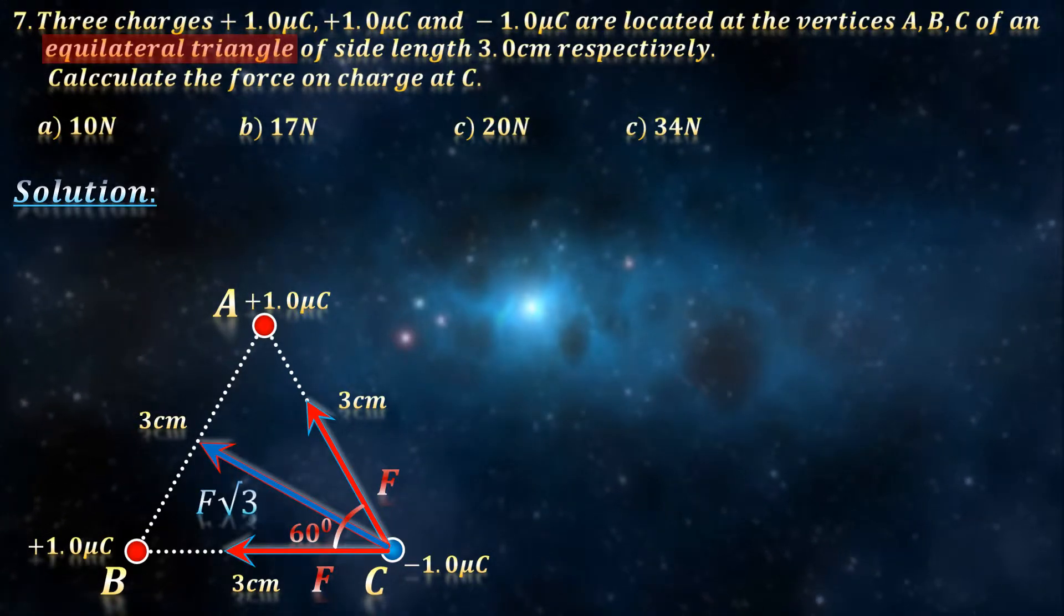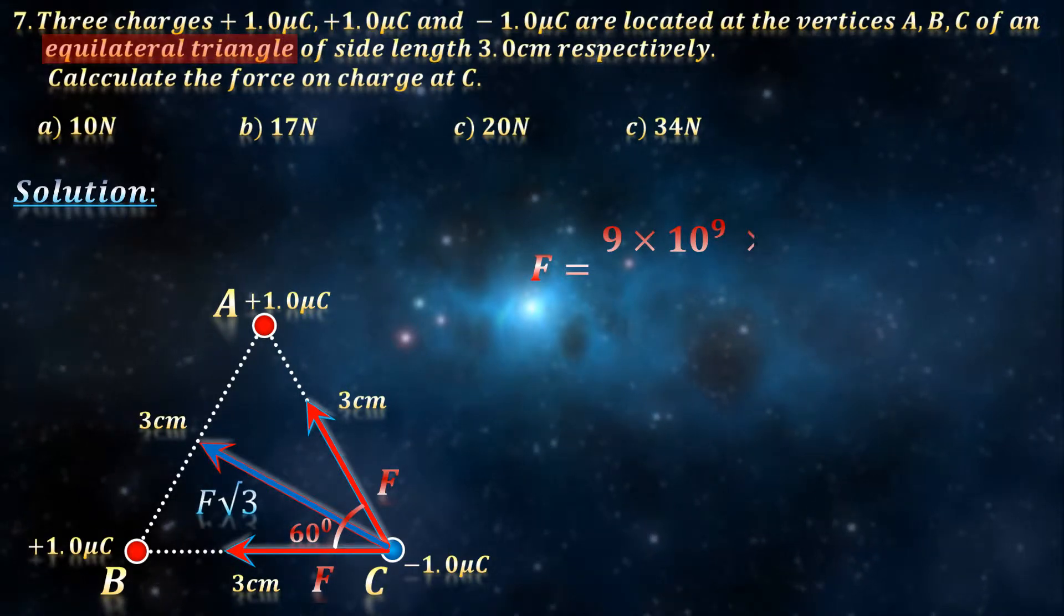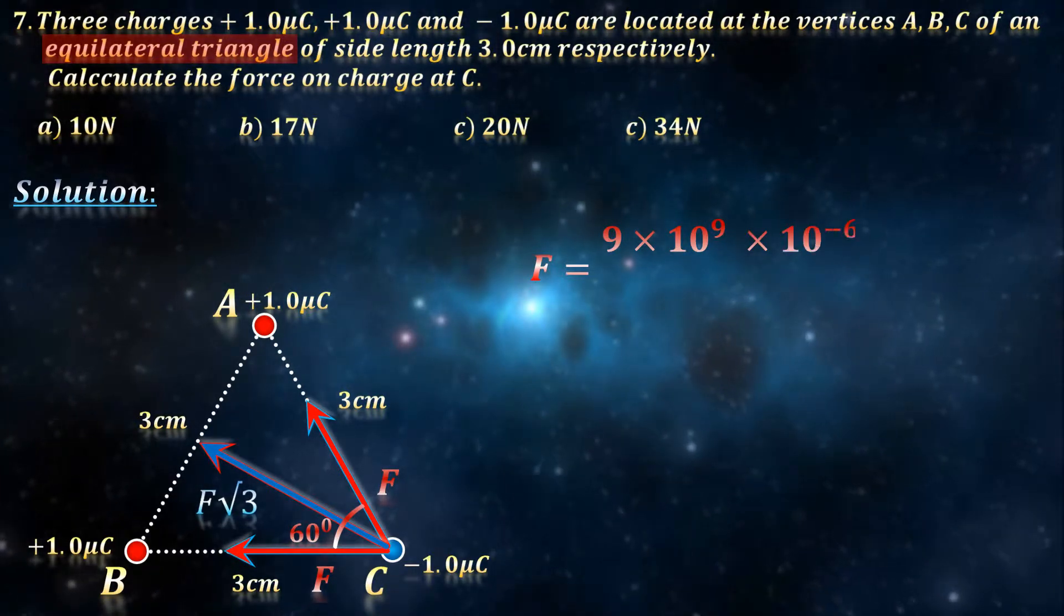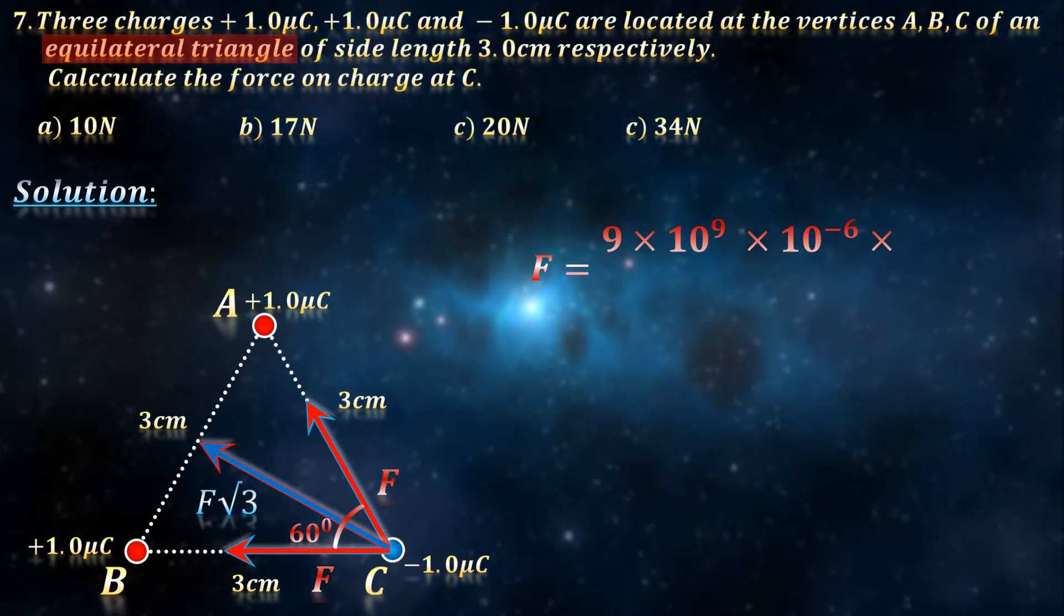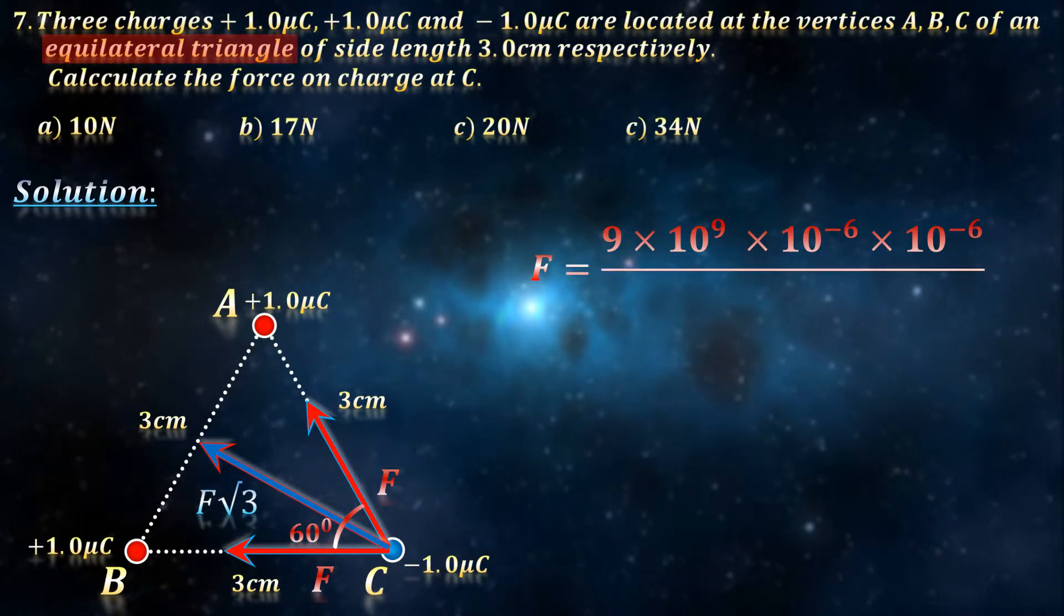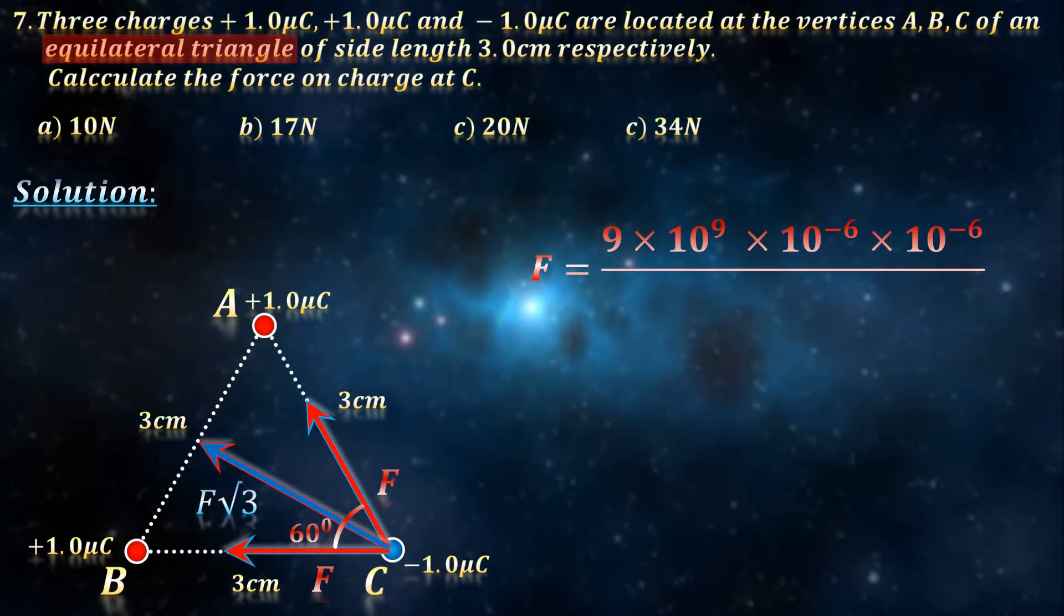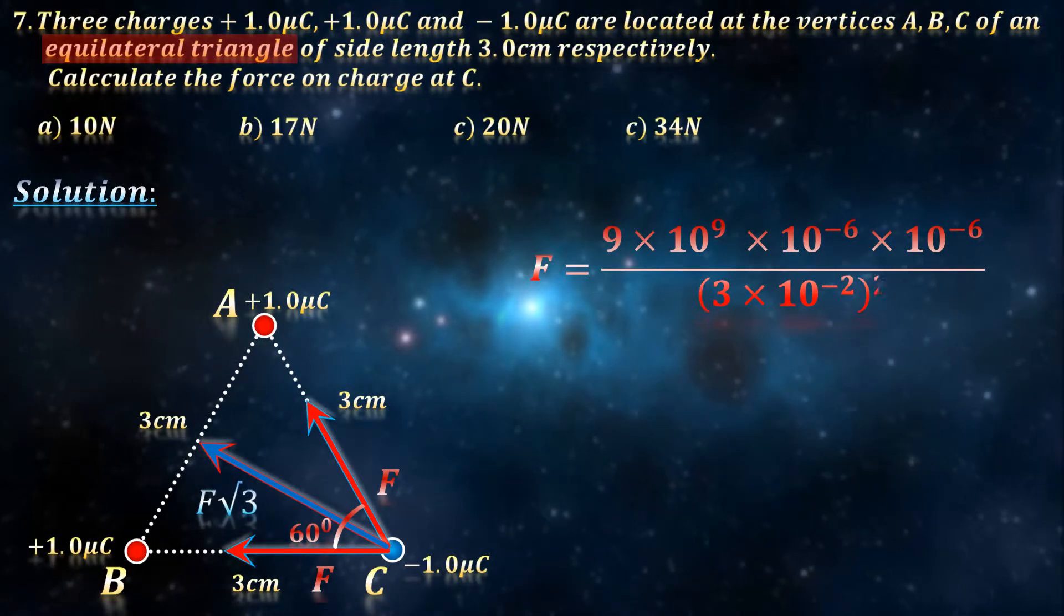Using Coulomb's law, F equals 9 times 10 to the 9th, multiplied by a micro, which is 10 to the minus 6, multiplied by another micro, again 10 to the minus 6, the whole thing divided by 3 cm squared, which is 3 into 10 to the power minus 2 whole squared.